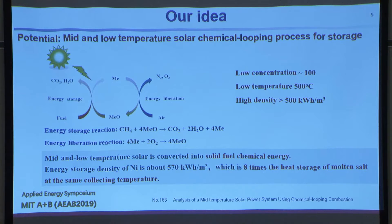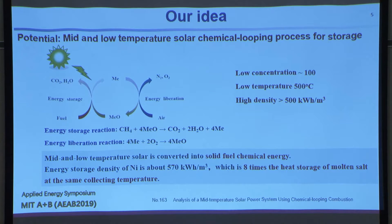We can use a low concentration ratio of around 100, which means we can use parabolic trough concentrators. Mid and low temperature solar energy is thus converted to solar fuel chemical energy.